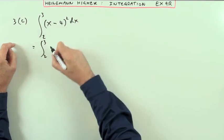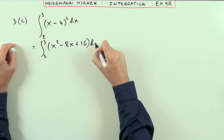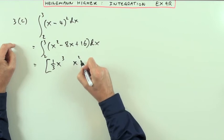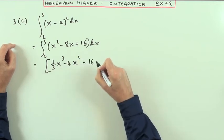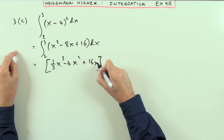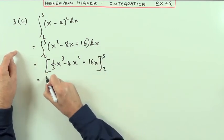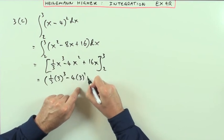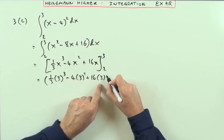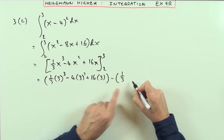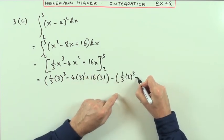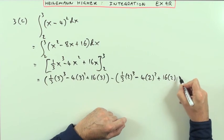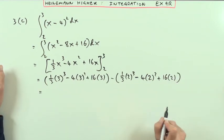Next one — part c — not ready to go yet. We've got brackets to multiply out: square the first, twice the product, square the last. Now it's ready. Add 1 to the power divide by that power for each term, and the linear constant goes back to a linear term. Working it out at 3 and subtracting at 2: a third of 3 cubed, minus 4 times 3 squared, plus 16 times 3, take away a third of 2 cubed, minus 4 times 2 squared, plus 16 times 2.